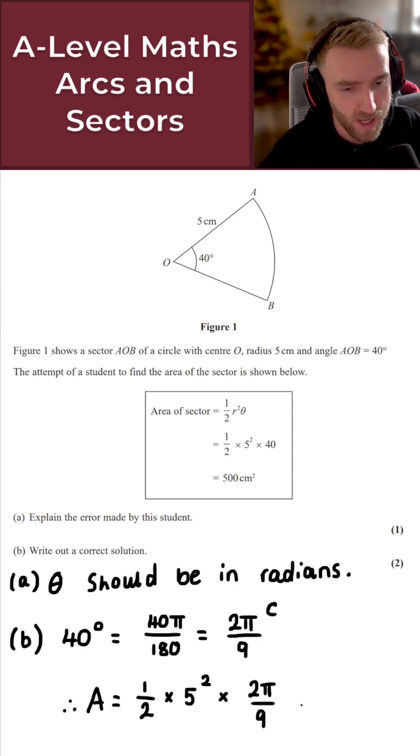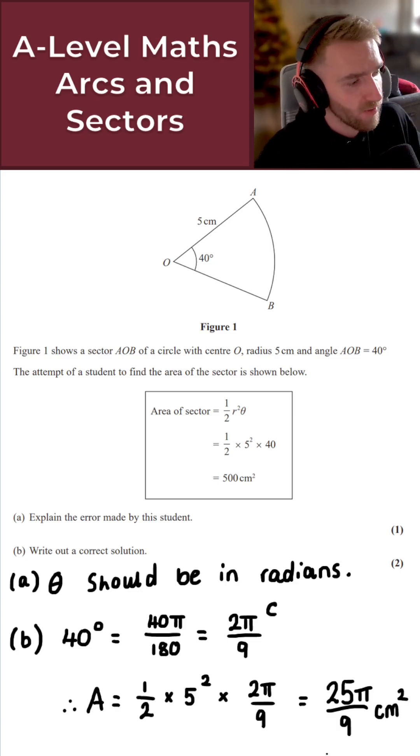And just divide top and bottom by 2 then, what we get here is 25 pi over 9. And of course, don't forget your units here as well, so this is centimeters squared. And there we go. That gives us the solution to today's question.